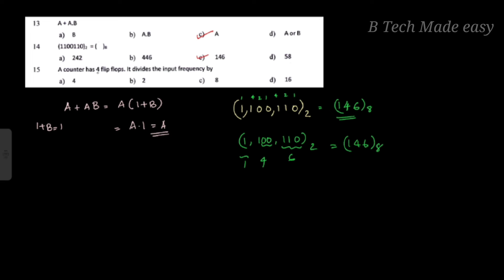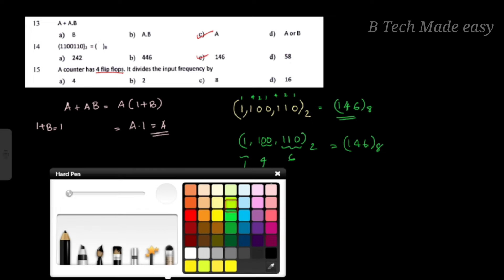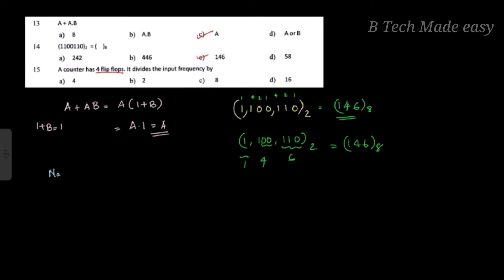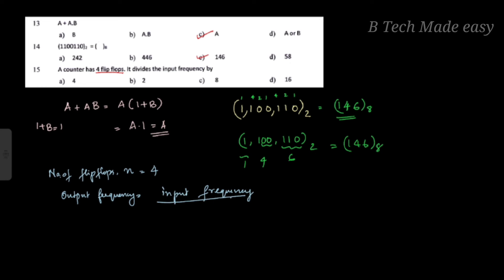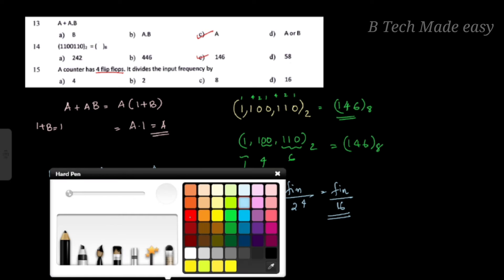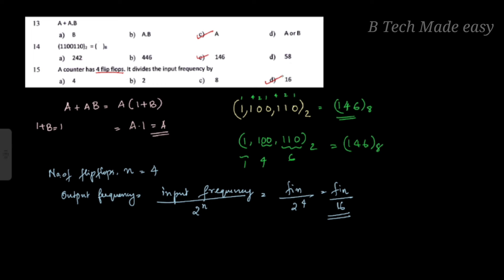Next question: a counter has four flip-flops. What does it output? Four flip-flops divide the input frequency by 2 raised to n, where n is the number of flip-flops — 2 raised to 4. So F-input divided by 2 raised to 4 equals F-input divided by 16. The input frequency is divided by a factor of 16. Option D is 16.